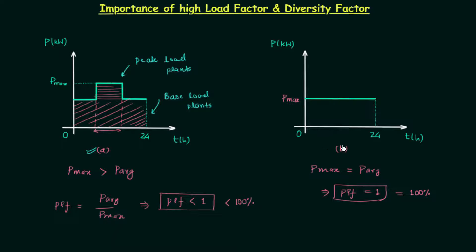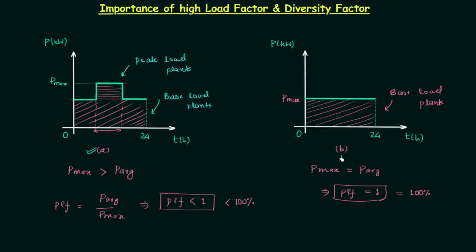In load curve B there is no peak load — there is only base load. So only base load plants are required to satisfy load curve B. Comparing the two, satisfying load curve A is much more difficult than load curve B because in load curve A we need to operate the peak load plants along with the base load plants.